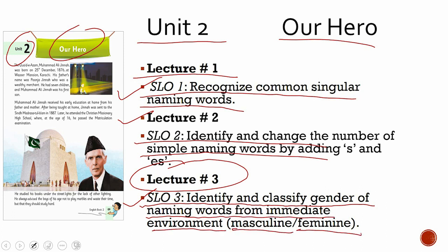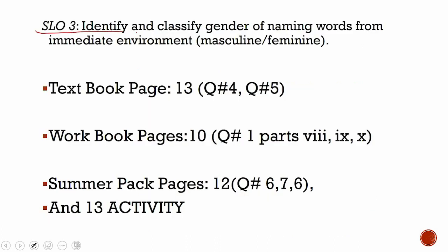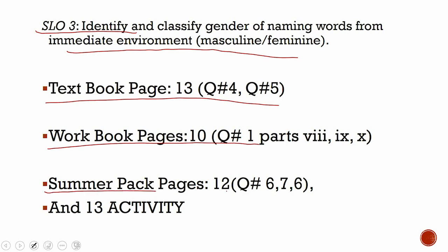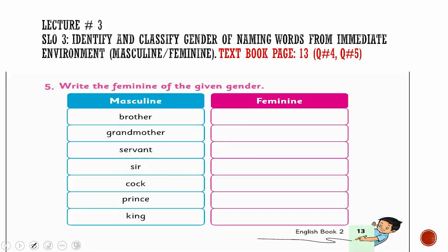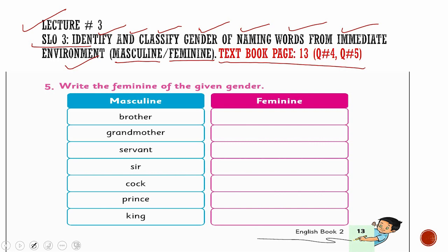Lecture 3 covers masculine and feminine. To study this SLO, you need textbook page 13, workbook page 10, and summer pack pages 12 and 13. The SLO is: identify and classify gender of naming words from the immediate environment — masculine and feminine. Please open your textbook to page number 13 and have it in front of you.